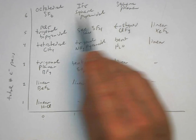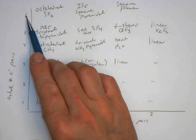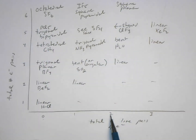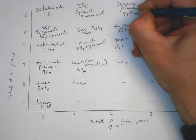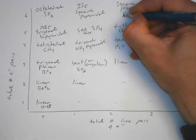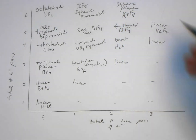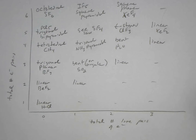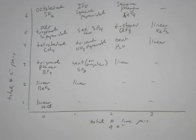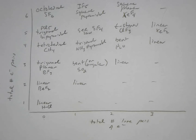A square planar molecule has six pairs of electrons around it, but two of them are lone pairs and four are bonding pairs. A good example of that is xenon tetrafluoride, XeF4. So this is just an alternate table from the one in your text — sometimes people find this helpful, sometimes they don't. Use it if you think it's helpful to you. Thank you.